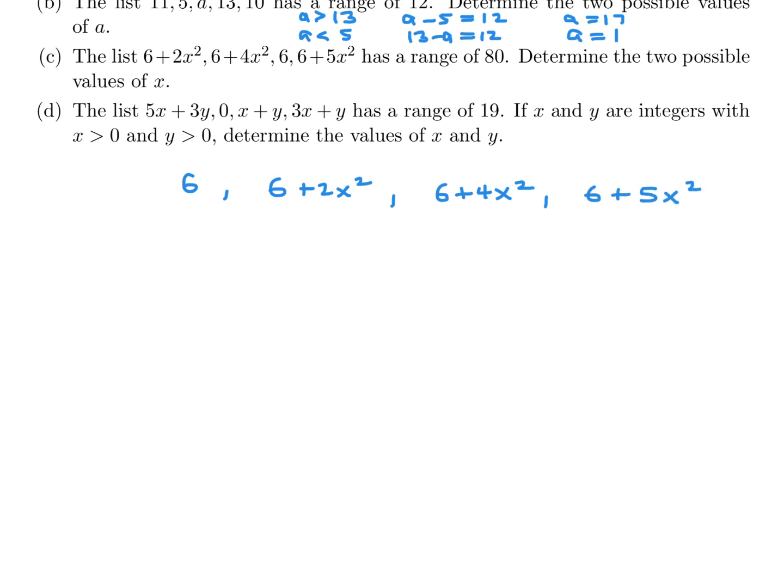So the range is going to be the big guy minus the little guy, so it's going to be 6 plus 5x squared minus 6. And they've already given us that it's 80. So then this reduces to 5x squared is 80. x squared, therefore, would be 16, and therefore x would be plus or minus 4. And those are the two possible values of x.